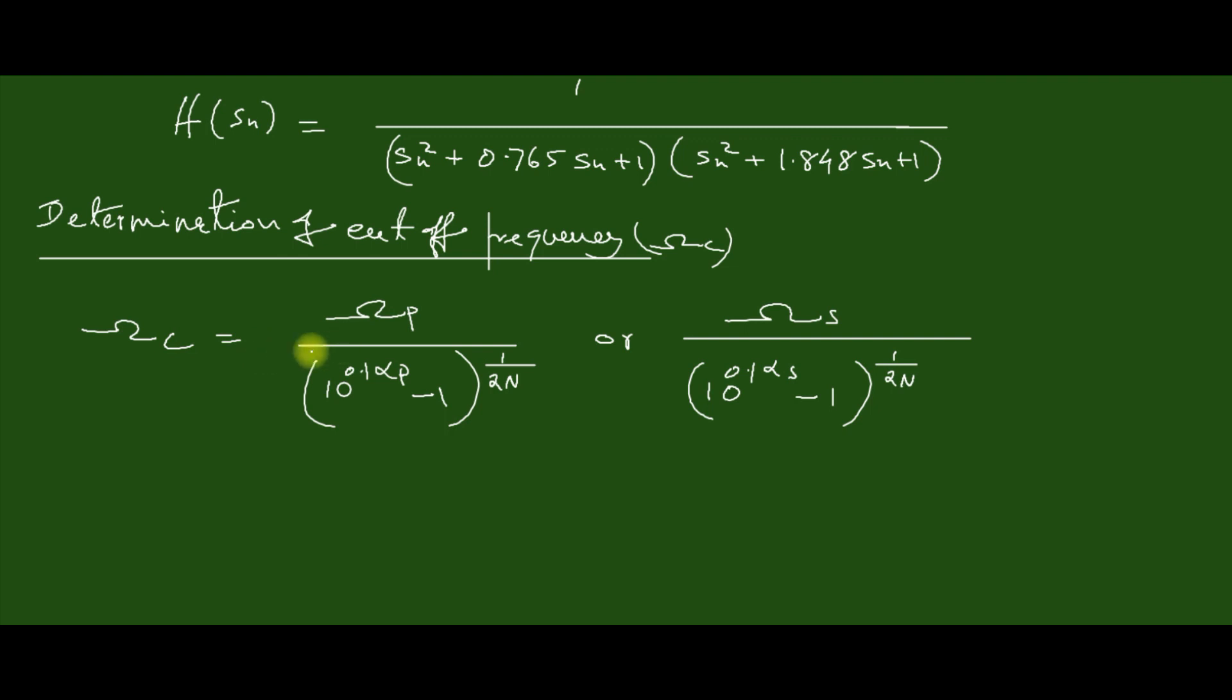The cutoff frequency is given by ω_p/(10^(0.1·α_p) - 1)^(1/(2N)) or ω_s by this expression. There will be a slight difference in the cutoff frequencies when we are computing using ω_p and ω_s. So for the time being, let us take this ω_p by this expression for the computation of ω_c.